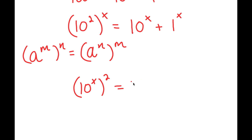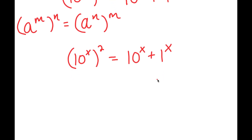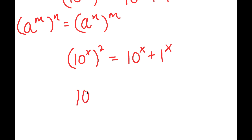So now I have 10 to the power of x to the power of 2 is equal to 10 to the power of x plus 1 to the power of x. Now, 1 to the power of any number is just going to be 1. So we can just get rid of this x as an exponent because it won't really change anything. So now I have 10 to the power of x squared is equal to 10 to the power of x plus 1.